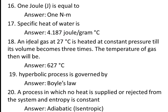Eighteenth question: an ideal gas at 27 degrees Celsius is heated at constant pressure till its volume becomes three times — what is the temperature of the gas? This is solved using Charles' law (constant pressure process): V1/T1 = V2/T2. Since V2 = 3V1, substituting the values gives T2 = 627 degrees Celsius. Always remember to convert Celsius to Kelvin before using any formula.